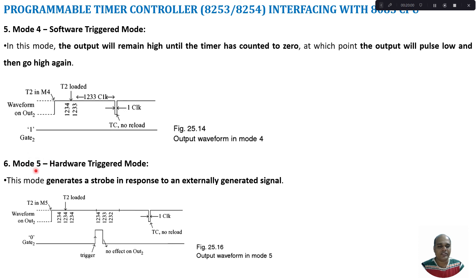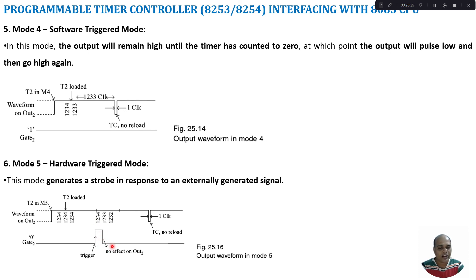Mode 5 is hardware triggered mode. This mode generates a strobe in response to an externally generated event. When a value is loaded, the out signal goes high. If gate signal is 0, down counting does not start. As soon as a valid gate signal appears, down counting starts. Even if the gate signal then goes low, down counting continues. Upon reaching terminal count, the out signal goes low for one clock pulse and no reload operation is performed. This can also be used to generate a trigger signal after a certain time period.